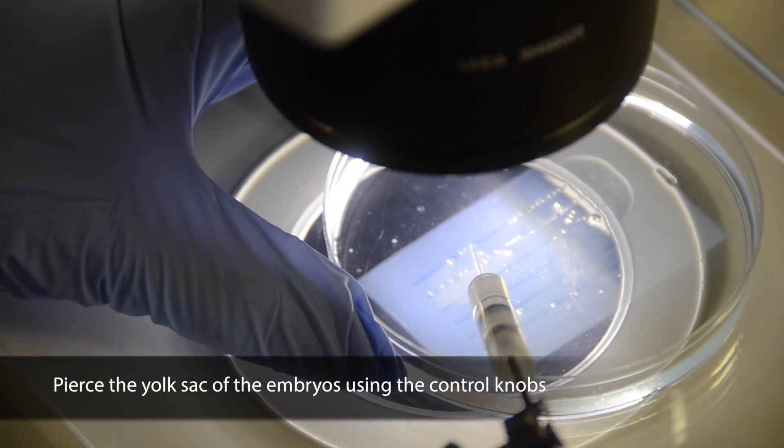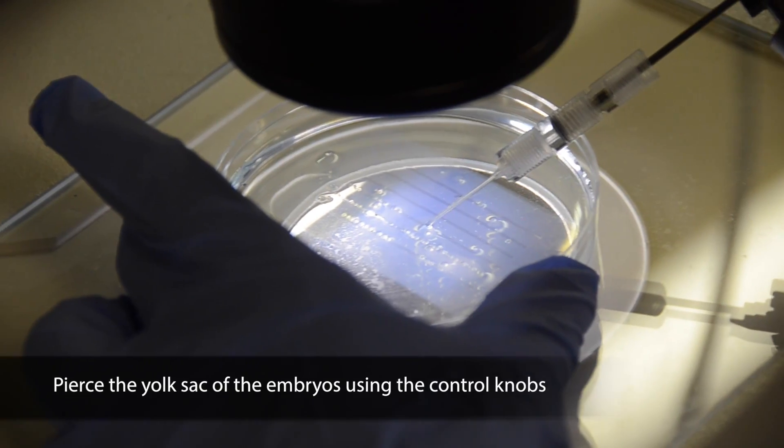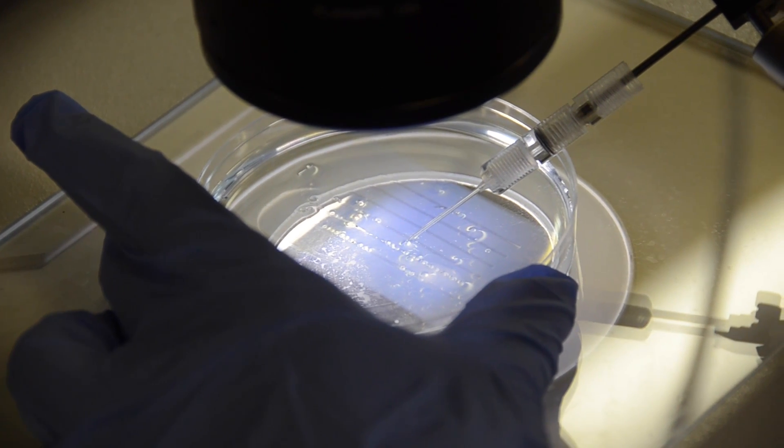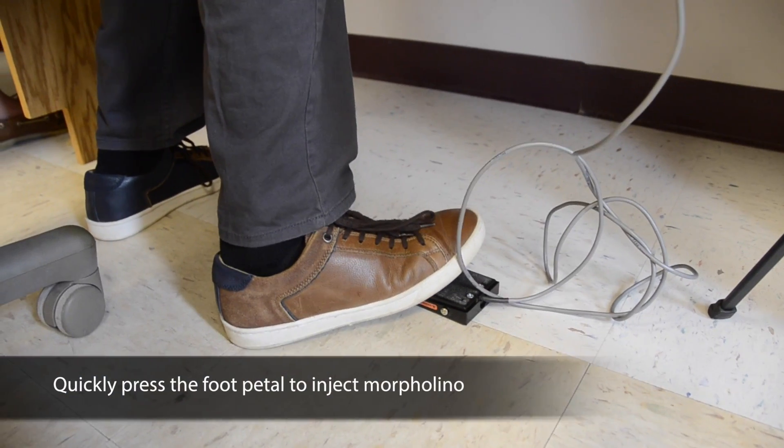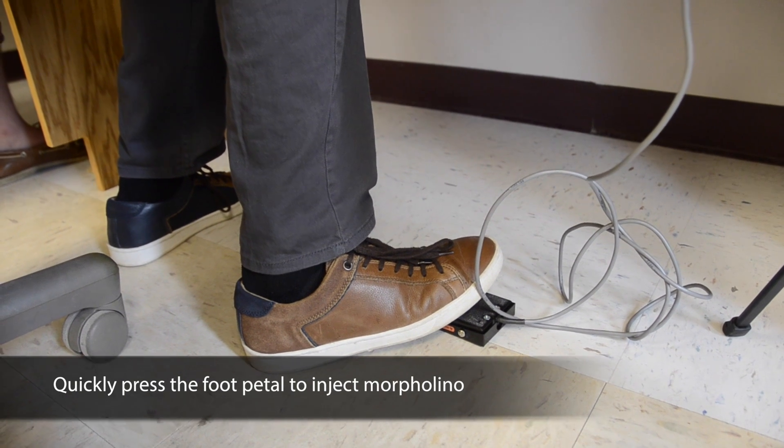Watching through the microscope, pierce the embryo using the knobs and make sure the needle goes into the yolk sac of the zebrafish. Press the foot pedal. This injects a small amount of Morpholino into the embryo.